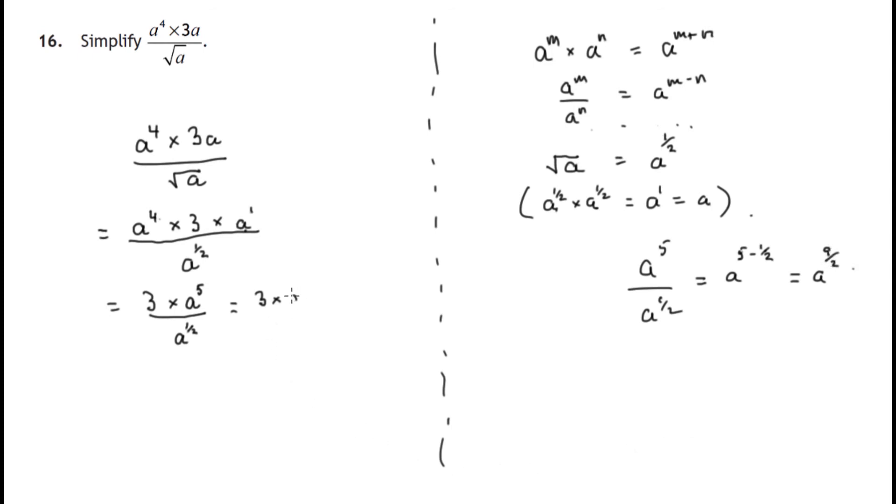So that's 3 times a to the 9 halves. And write that without the multiplication sign: 3 a to the power of 9 over 2. And that's that expression simplified. We don't have to take it any further.